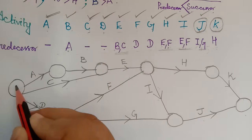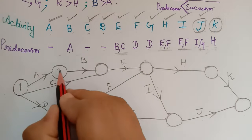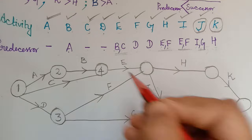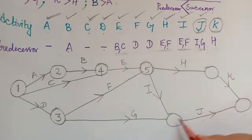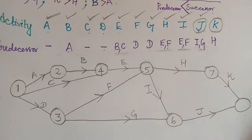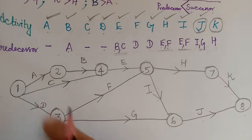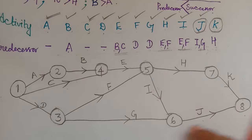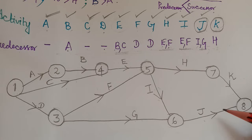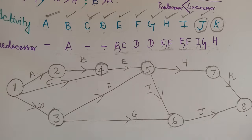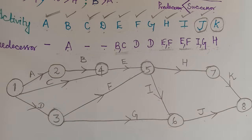Now let us number the nodes: 1, 2, 3, 4, 5, 6, 7, and 8, assigned in order. This is how we draw the network diagram. You can draw it neatly to scale with equal spacing in a fair copy — this rough diagram shows the correct network connections. Hope you have understood how to draw the network. Thank you.